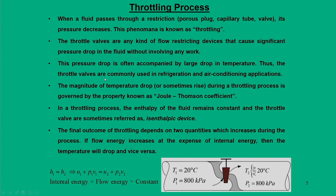Before going to Joule-Thomson coefficients, let us first understand the throttling process. A throttling process occurs when a fluid passes through a restriction — this can be a porous plug, a capillary tube, or any kind of valve. The pressure decreases and such a phenomenon is known as throttling.